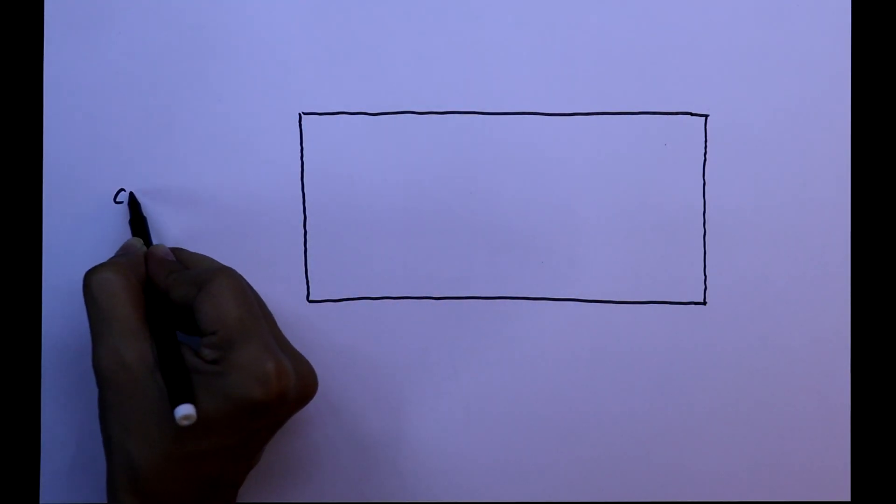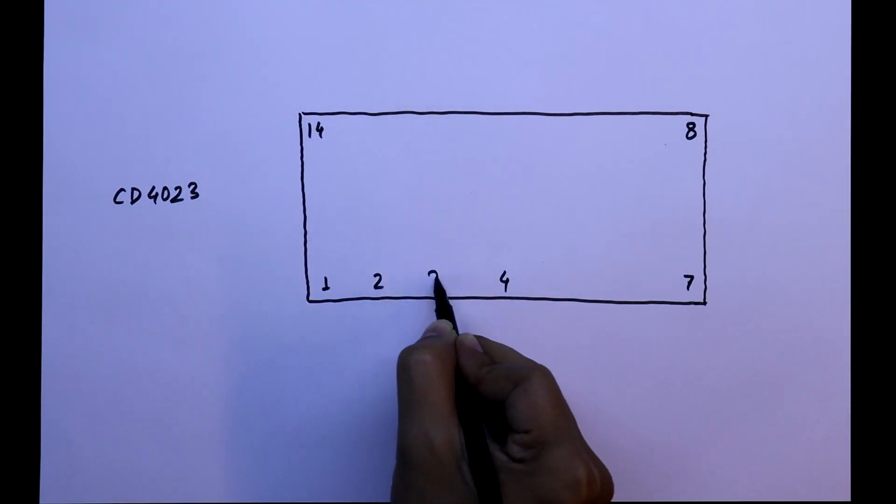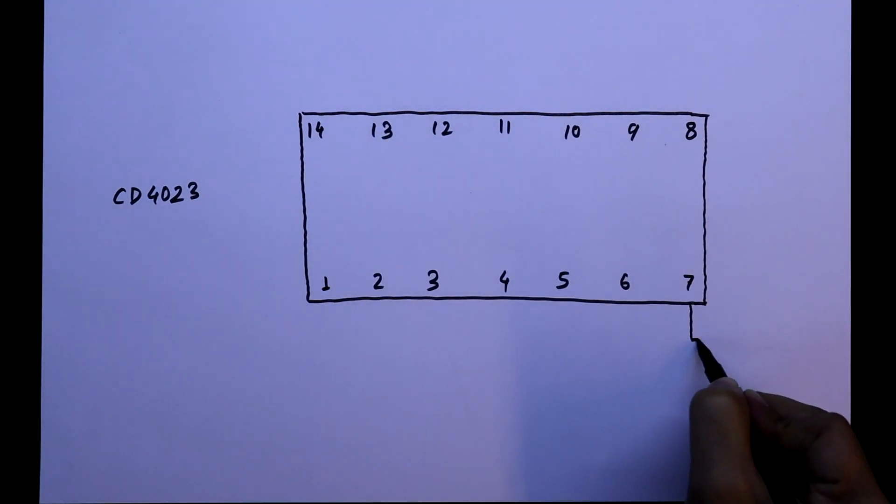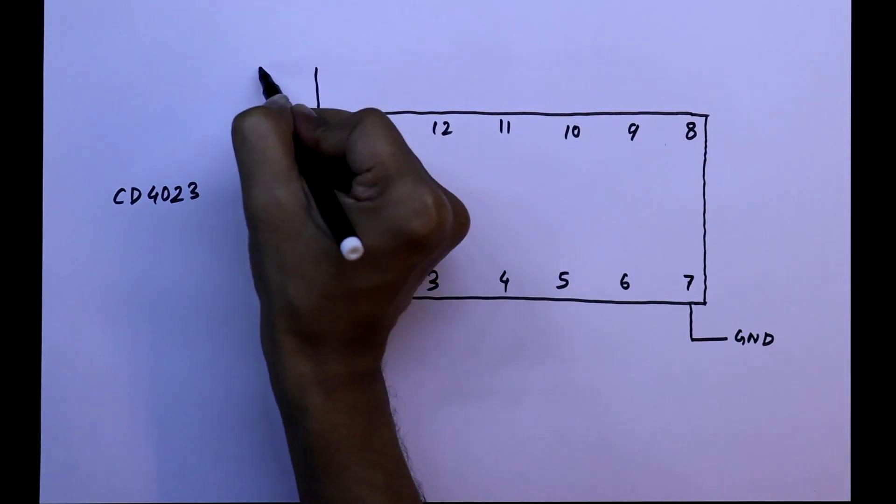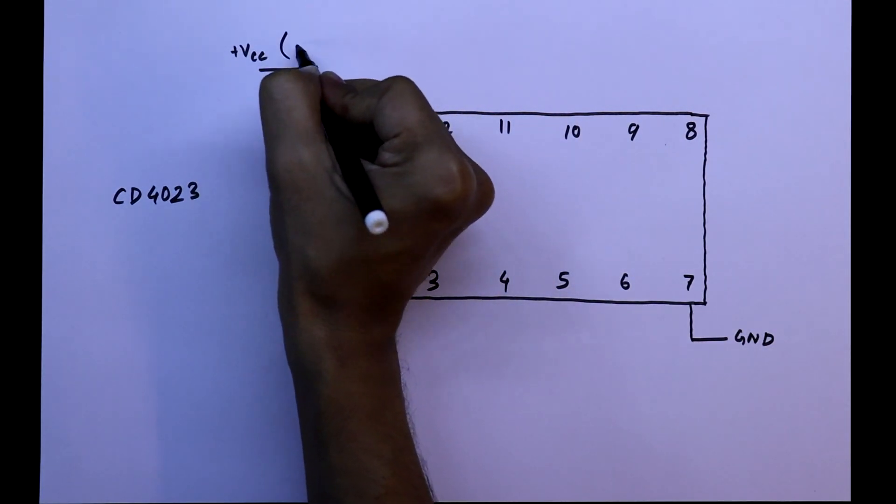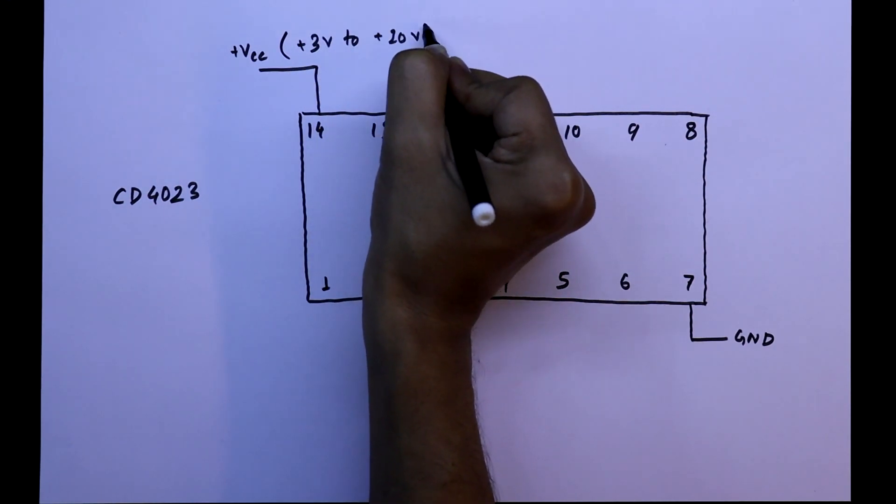This is the IC CD4023. It has 14 pins. Pin 7 is ground and pin 14 is VCC. You can supply from 3V to 20V.